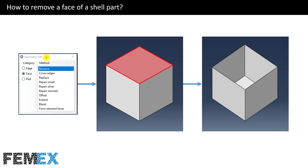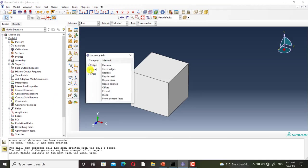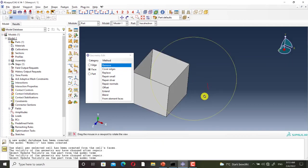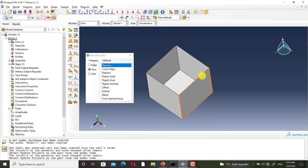In the Part Module there is a toolbox named Geometry Edit, and there are a lot of useful tools in this toolbox. I set the category to Face and I select the Remove tool. Then I select a face of the shell part and remove it. I go to Abacus to do this procedure. I click on Geometry Edit, I select Face, I select Remove, and I select the face and click on Done. As you can see, this face is removed.